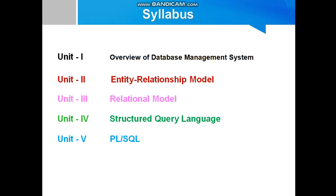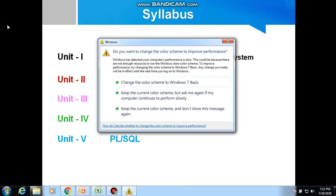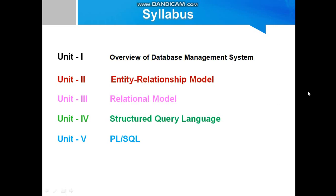The DBMS paper has five units. The first unit is overview of Database Management System. The second unit is Entity Relationship Model, simply called ER Model. The third unit is Relational Model. The fourth unit is Structured Query Language. The fifth unit is PL/SQL. The first three units are theory-based and the fourth and fifth units are programming-based.